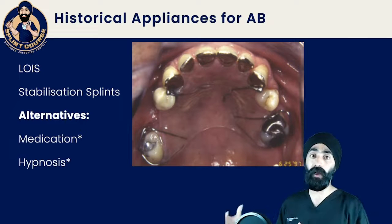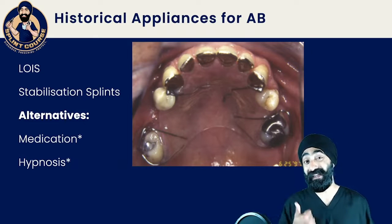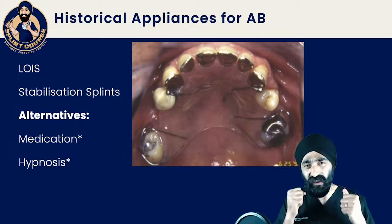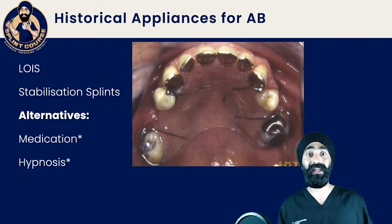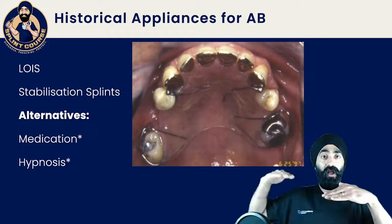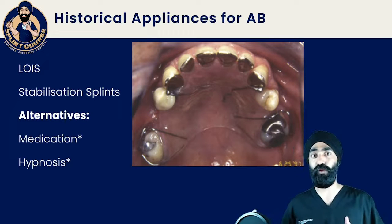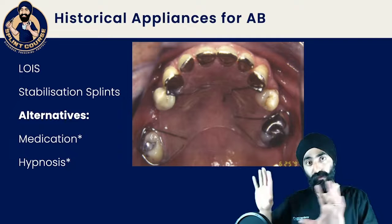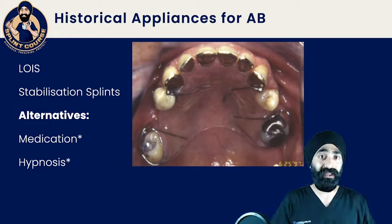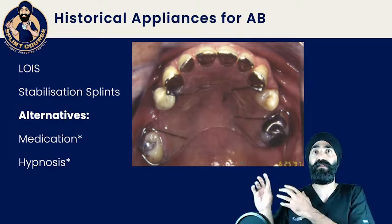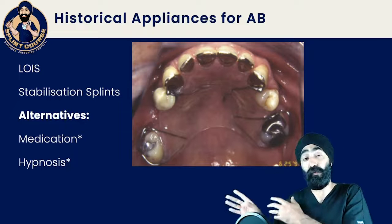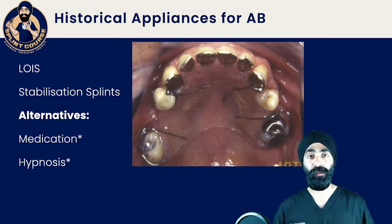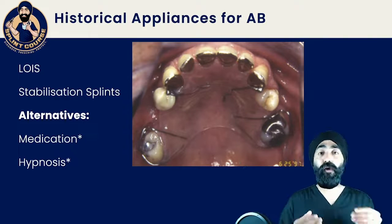Other non-appliance alternatives for awake bruxism include medication, but the evidence is really scarce. There is a medication called pregabalin given to some people with very severe anxiety, and a few case studies show it works well. But that's a very specialized area — you'd want to involve a neurologist or a doctor confident in prescribing pregabalin. Medications are beyond our general dental scope for most patients. Hypnosis has also been considered, but the evidence is scarce as to whether it can truly stop awake bruxism.